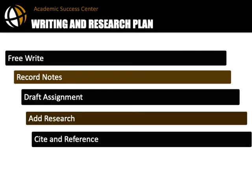So how can you engage in effective and ethical research online? It begins with having an effective plan and process that includes free writing, taking careful notes, drafting assignments, adding research, and citing and referencing. Let's look at each step in this process.